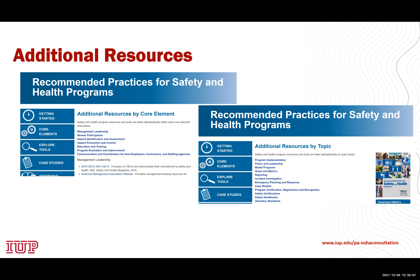Under additional resources, you can search by core element or by topic. Clicking on any of the core elements provides a whole series of information to help you. For example, under management leadership, one resource is '2016 CEOs Who Get It.' You can also search by topic — for instance, looking at model programs or case studies where companies have implemented safety and health programs and the benefits derived from those programs.